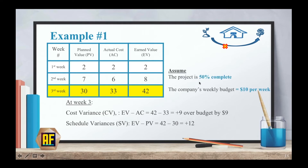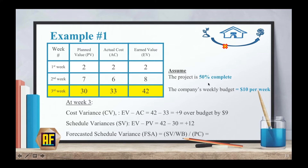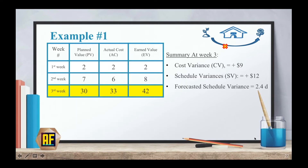We assumed the project is 50% complete, and the company's weekly budget is $10 per week. Now we can calculate the forecasted schedule variance, the FSA, which is schedule variance (12) over the weekly budget ($10), over the percentage complete of the project: 12 over 10 over 0.5 gives us 2.4 days. Remember that the answer here is in days.